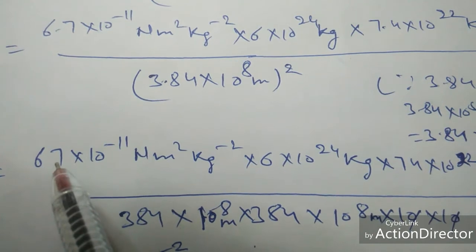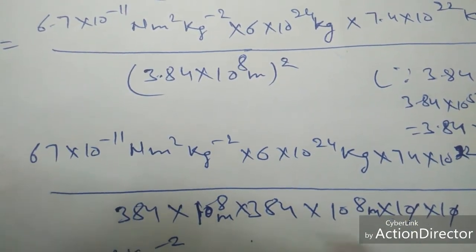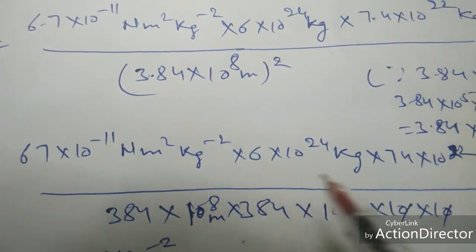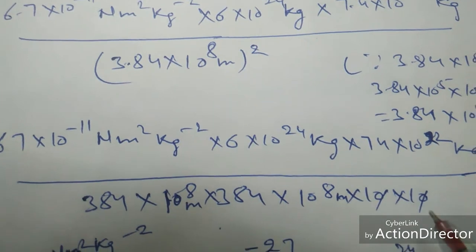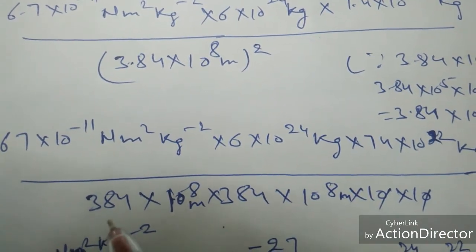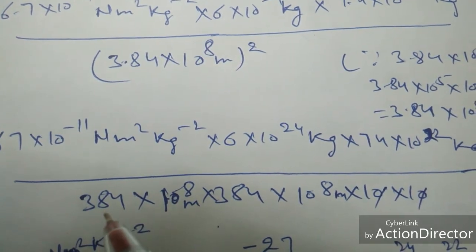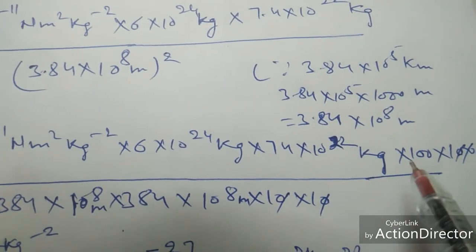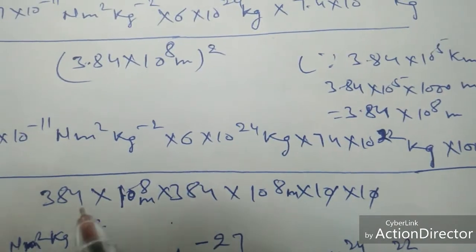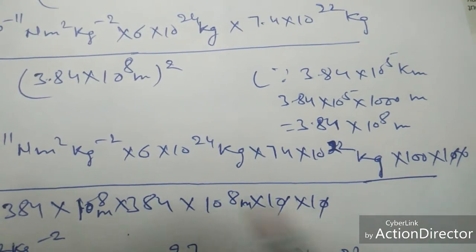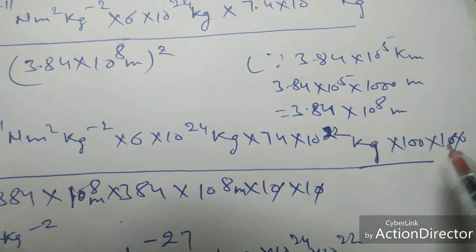Now we will remove the decimal points. This is 6.7, so the point is before one digit, so 10 is here. Similarly, 7.4 is one digit, here 10. 3.84 is two digits, the decimal is before two digits, so it will be 100 there. And again, 3.84, the 100 will be here. So these two zeros are cut by 100.